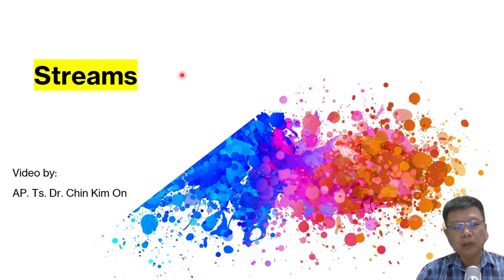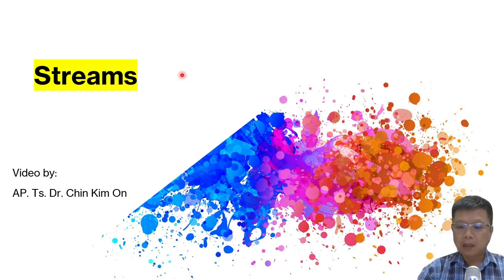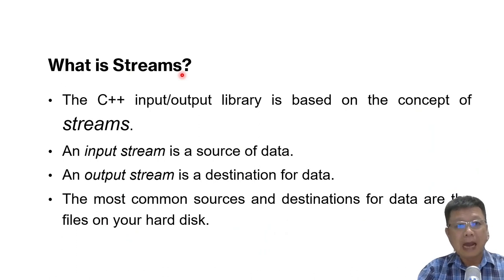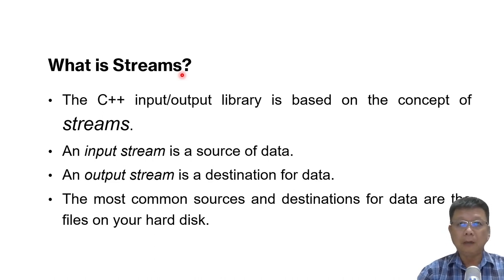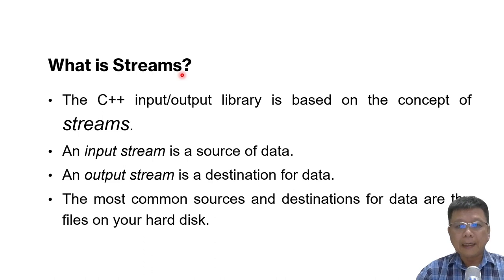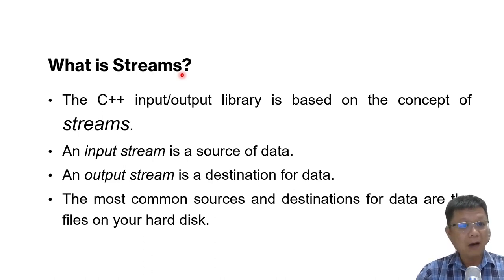Hi all. In this video we are going to learn about streams. Basically we have learned about the I/O streams, where we found that we have CIN, we have COUT — we can input and display the output using the libraries called I/O streams. And in this video we are going to learn about F streams. F stands for file — file streams.